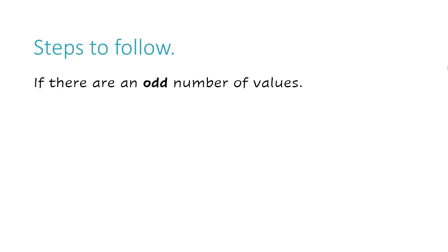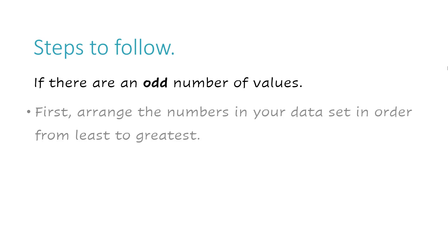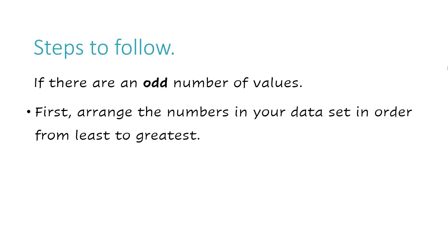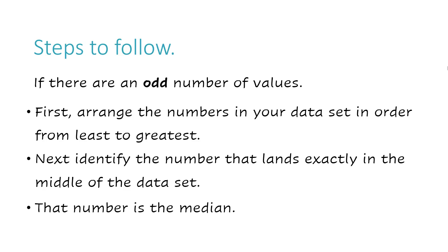Some steps to follow when calculating the median when you have an odd number of values. First, you want to arrange the numbers in your data set in order from least to greatest. Then you want to identify the number that lands exactly in the middle of the data set. That number is your median.